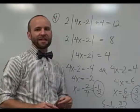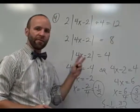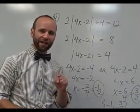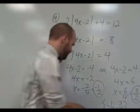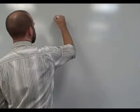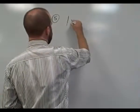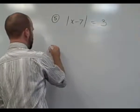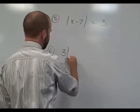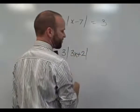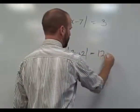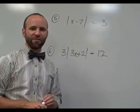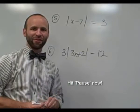Now I'm going to give you a couple of examples to try on your own. Go ahead and pause the video and work through both problems. The first equation is the absolute value of x minus 7 equals 3. The second equation is 3 times the absolute value of 3x plus 2 equals 12. Once you think you have them both solved, hit play and I will reveal the solutions.